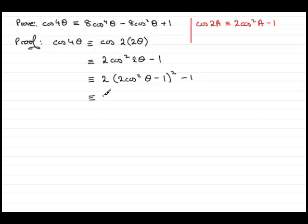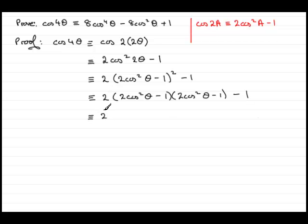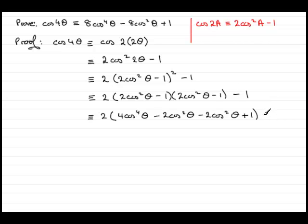All I need to do now is expand this bracket. I'll write it out again just in case, with the minus 1 on the end. Putting the 2 at the front and expanding the two brackets: 2 cos squared theta times another 2 cos squared theta gives 4 cos to the power 4 theta. Then 2 cos squared theta times minus 1 is minus 2 cos squared theta. Minus 1 times 2 cos squared theta is another minus 2 cos squared theta. And minus 1 times minus 1 is plus 1. Then we've got the minus 1 on the end.